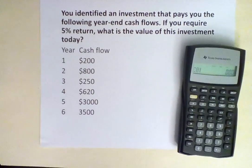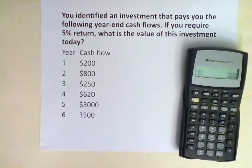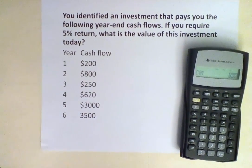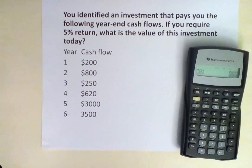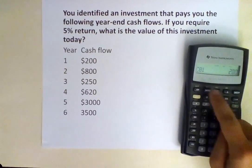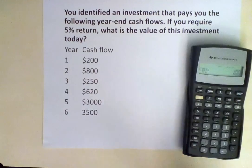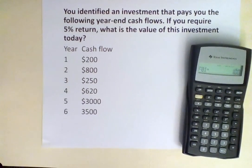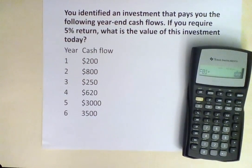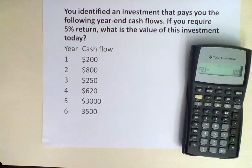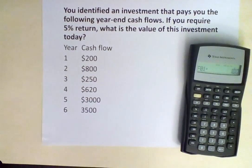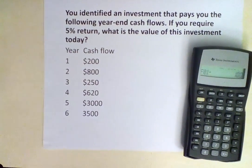Push the down arrow and you see C01. C01 is cash flow at time 1, and at year 1 we receive $200, so we input 200. Hit enter. Then the down arrow — you see F01. This is the frequency of the payment. We are only receiving $200 one time during year 1, so we keep it at 1.